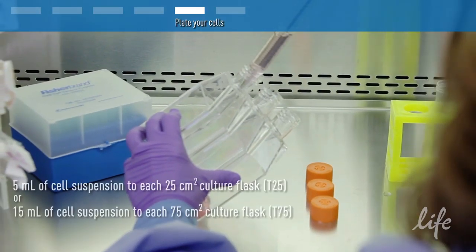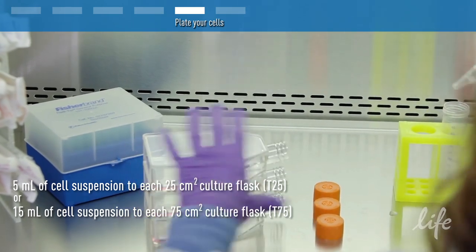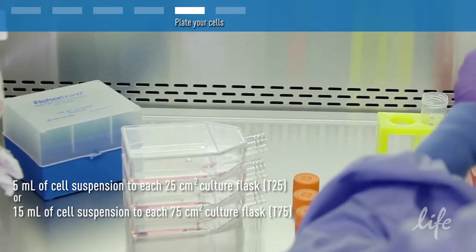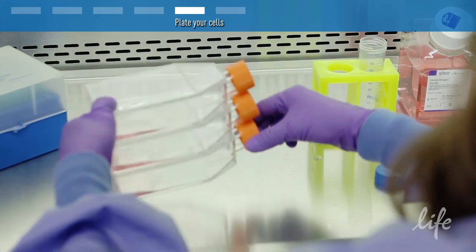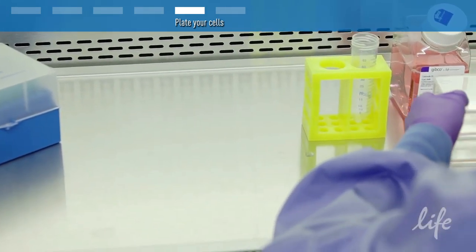When you plate the cells, add your cell suspension to the culture flask. Swirl the medium in the flasks to distribute the cells evenly so they won't grow in uneven patterns.